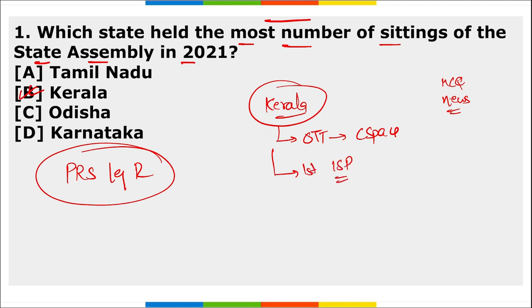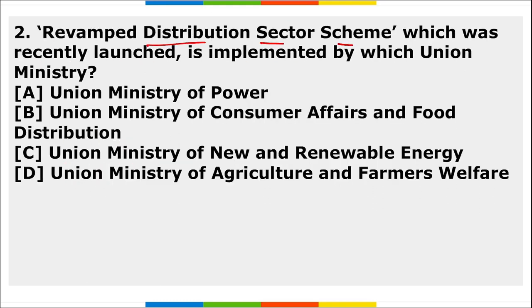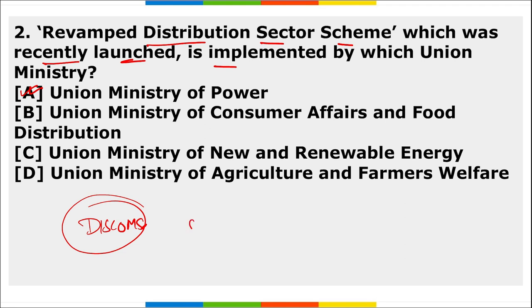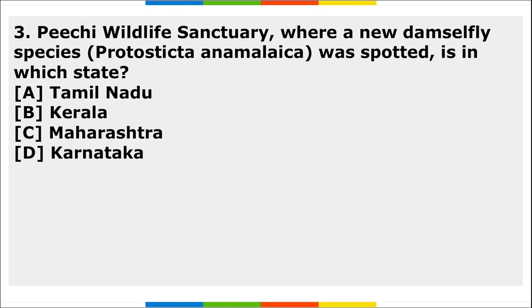Next question: the Revamped Distribution Sector Scheme, recently launched, is implemented by which union ministry? It was launched by the Ministry of Power. This scheme aims to help DISCOMs improve their operational efficiencies and financial stability. PM Narendra Modi also laid the foundation stone of various green energy projects of NTPC worth over 50 to 100 crore rupees and launched the National Solar Rooftop Portal.